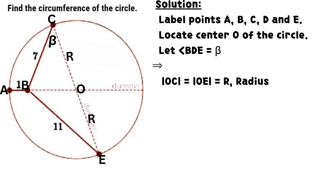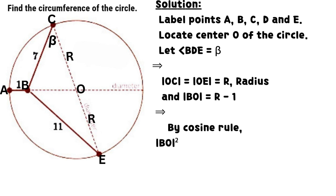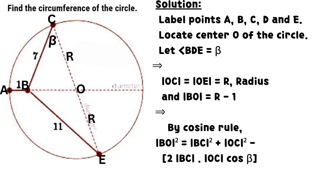Let angle BDE equal beta. It implies that line OC equals line OE, which equals R, the radius of the circle. And line BO equals R minus 1.